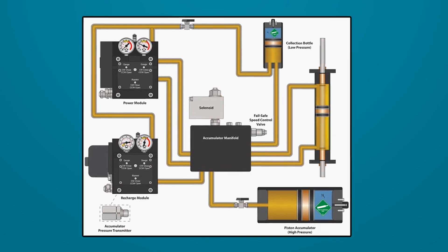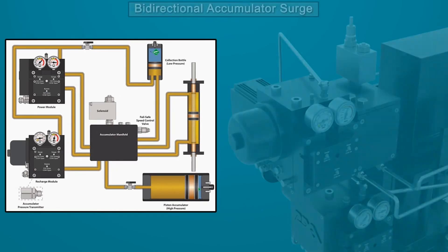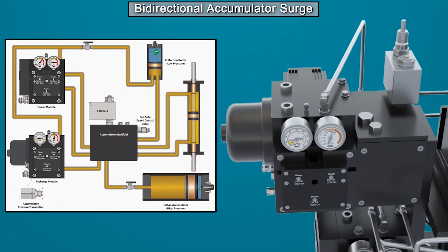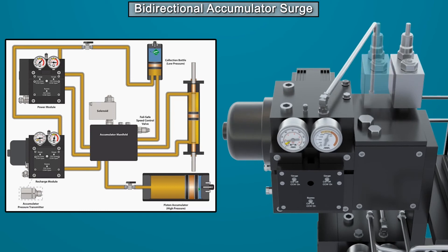To take things to the next level, REXA accumulators can be customized to provide a bi-directional surge capability. This configuration involves the use of two solenoids to quickly direct flow into and out of either side of the cylinder.